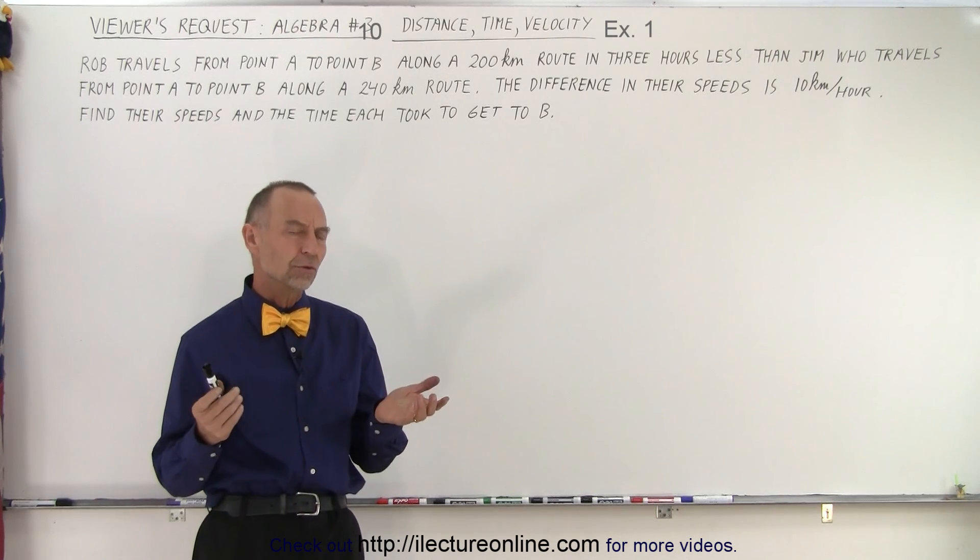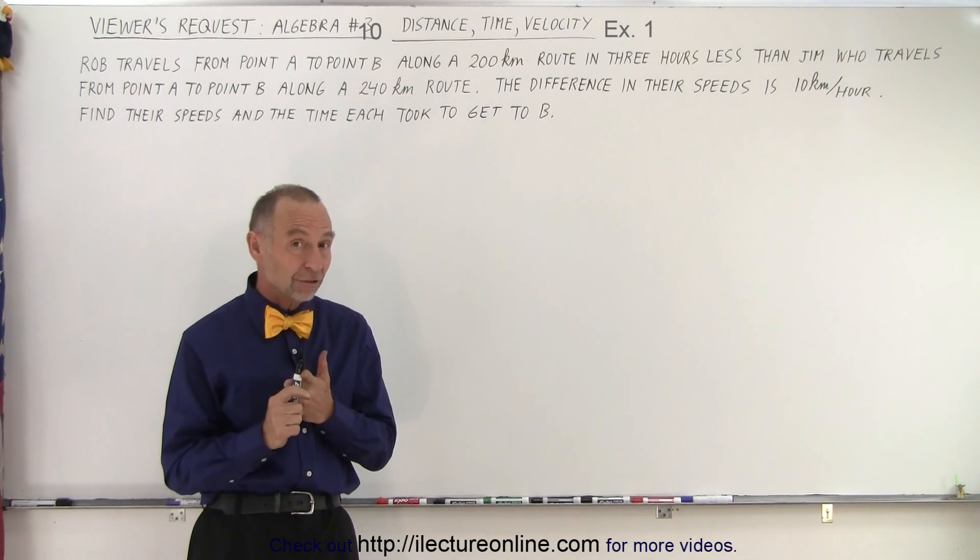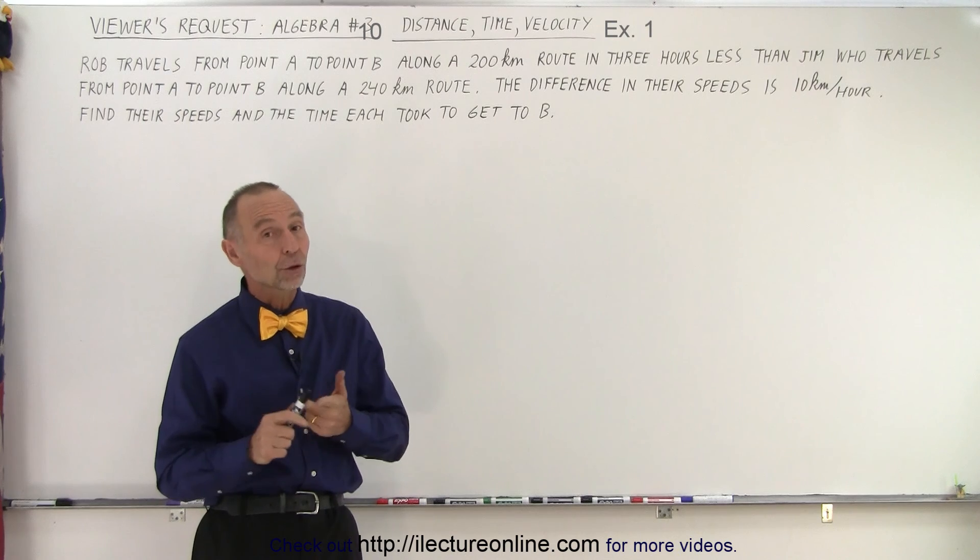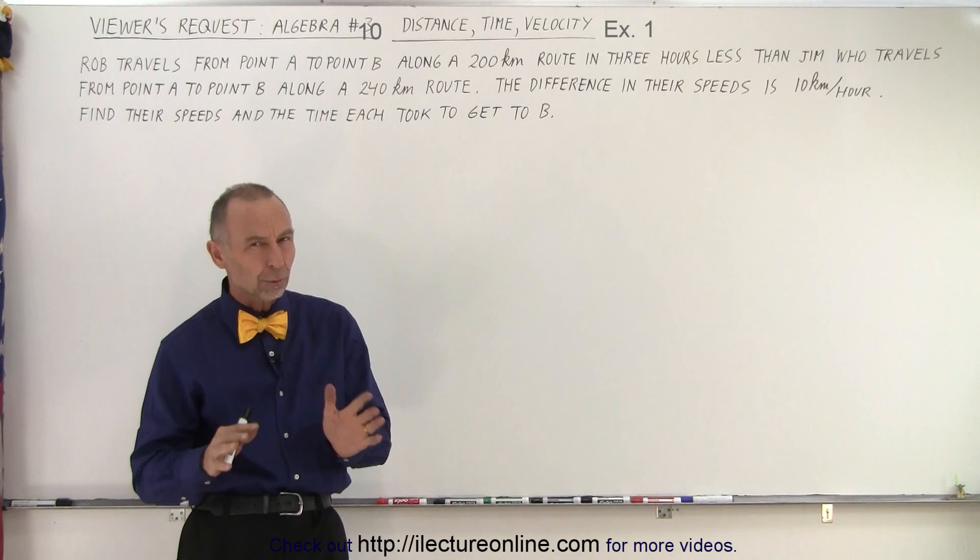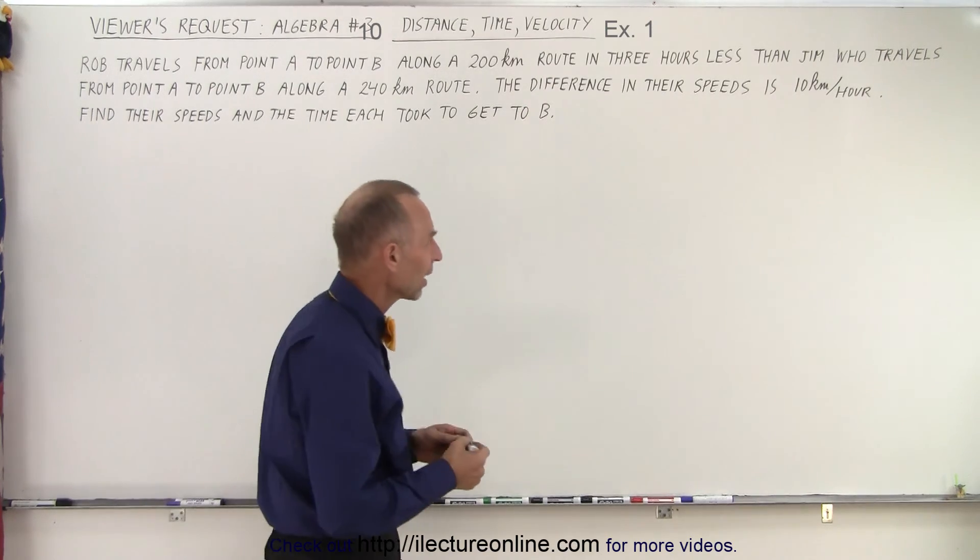Wow. So there are two unknowns. You don't know how long each of them took in time and you don't know what their speeds are. So we're going to end up with two equations that's for sure. But how do we approach that? Well let's make a diagram.